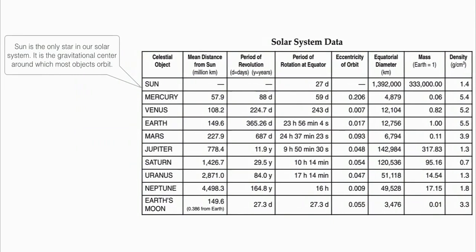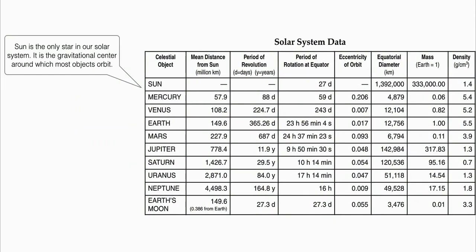First, the sun is the only star in our solar system. It is the gravitational center around which most objects orbit.